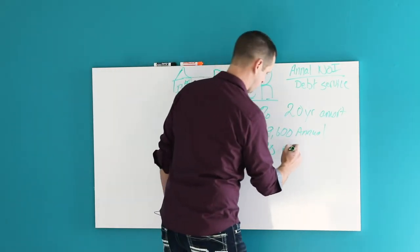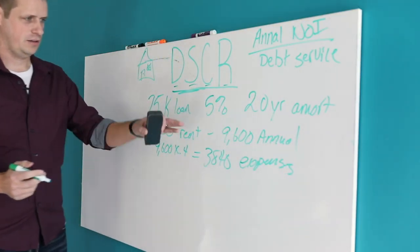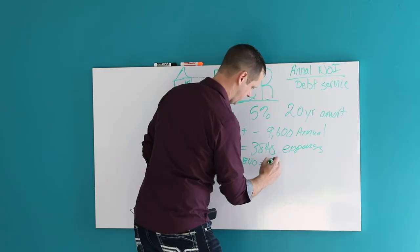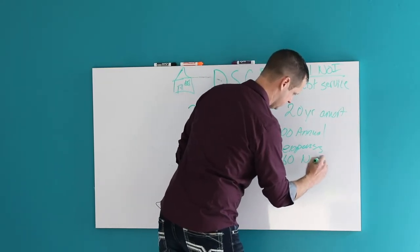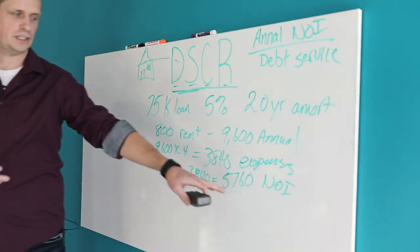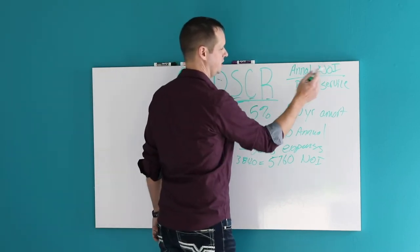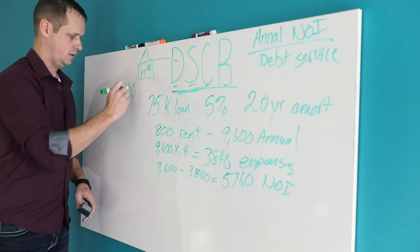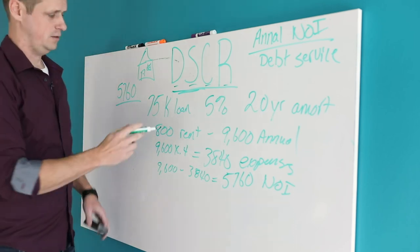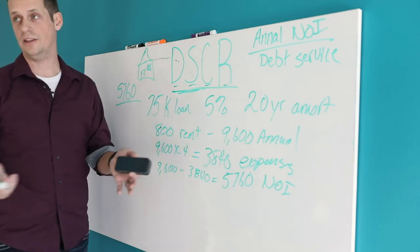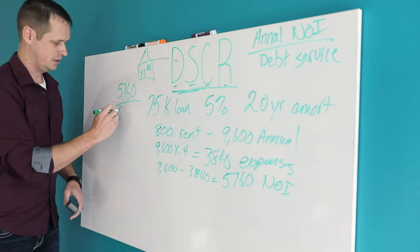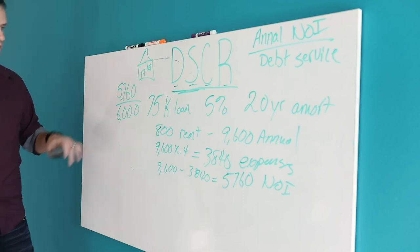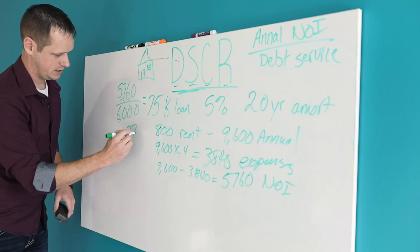So this is our expenses. Figure out our NOI, take our income minus our expenses, $9,600 minus $3,840. $5,760 NOI. So this property is producing $5,760 NOI. Now remember, we calculated our debt service coverage ratio. It's annual NOI divided by debt service. So let's do that. $5,760 divided by $6,000 a year of debt service. Annual NOI divided by the debt service equals 0.97 DSCR.